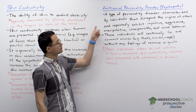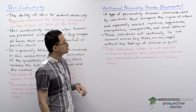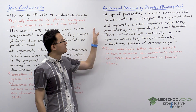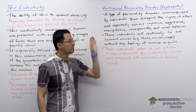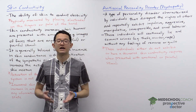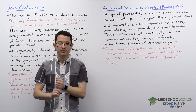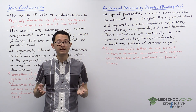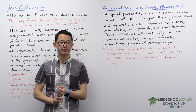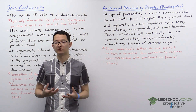Antisocial personality disorder is a type of personality disorder characterized by individuals that disregard the rights of others and repeatedly exhibit impulsive, aggressive, manipulative, irresponsible, and cruel behaviors. These are individuals that are going to constantly lie and commit crimes such as theft, murder, and rape. And afterward, these individuals are not going to have any feelings of remorse or guilt — they do these horrible things and they don't feel bad about doing them afterward.